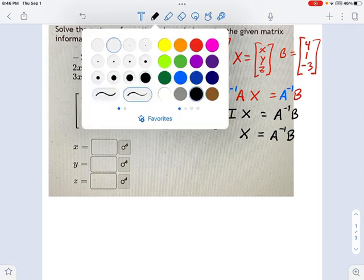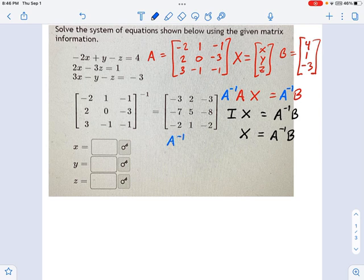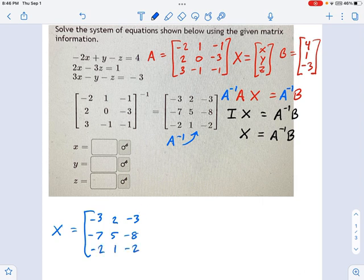Remember what I just said. A inverse is this guy, this matrix right here. So let's go ahead and do this multiplication. The matrix X, the variable matrix, equals negative 3, 2, negative 3. That's a negative 3. Negative 7, 5, negative 8, negative 2, 1, negative 2. And it's all of that times the solution matrix B, which was 4, 1, negative 3.